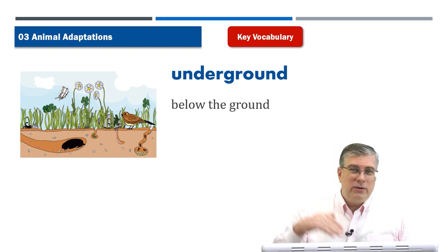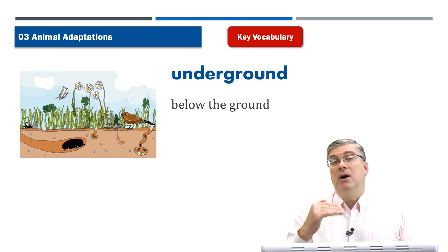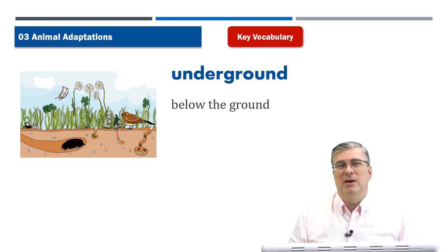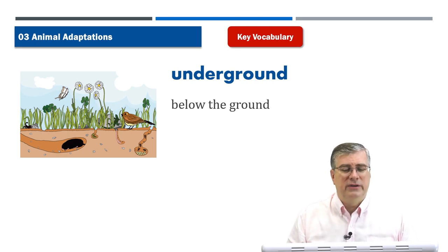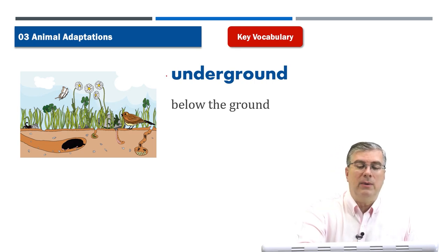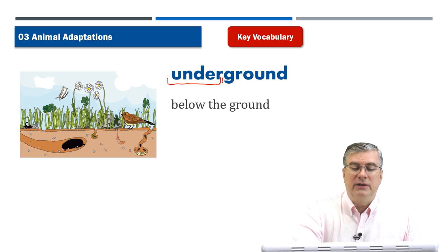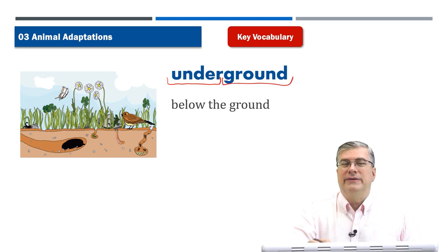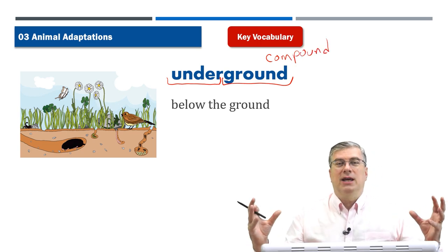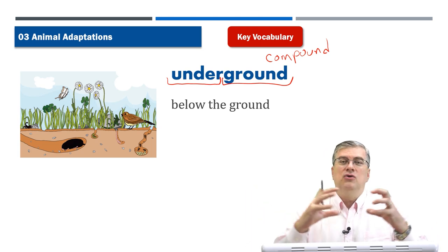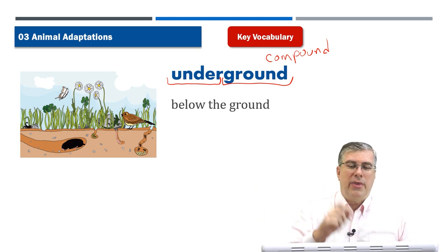Underground — of course, we live above ground. We don't usually say above ground because that's normal for us. But if we go under the ground, that's a little odd, so we say underground. This is a compound word — we call these compound words because compound is when you take two or more things and join them together to make one thing.